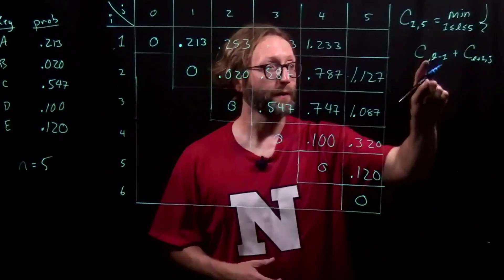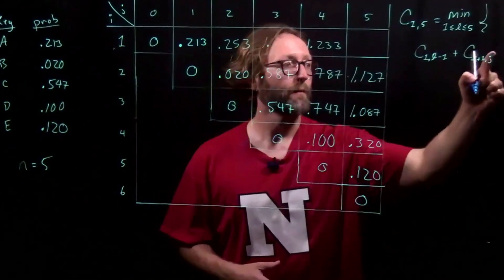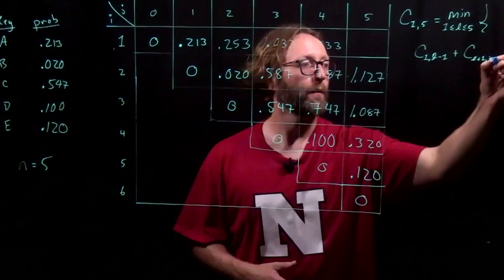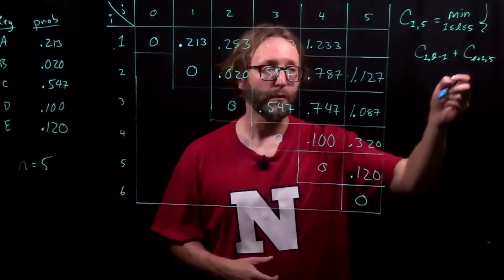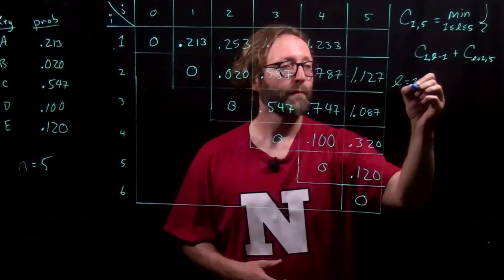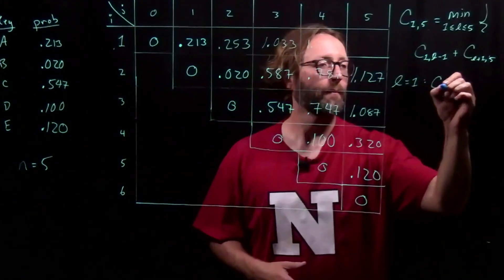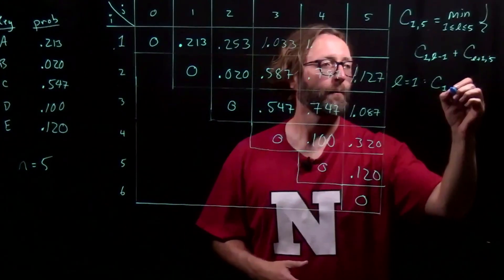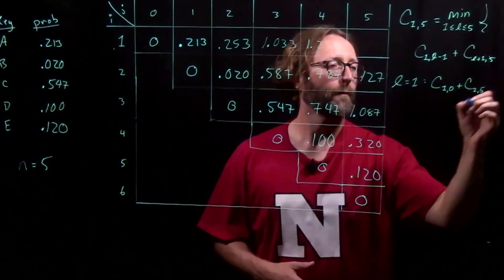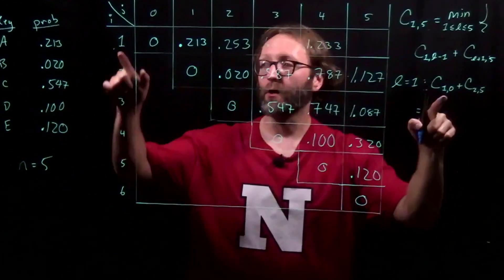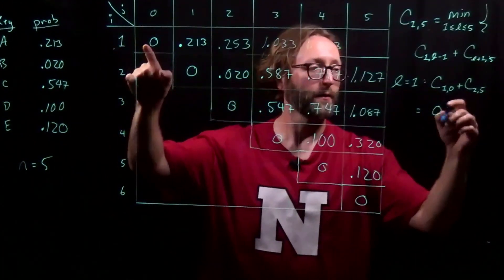Again, I and J are fixed. And we now have five possibilities for L: 1, 2, 3, 4, and 5. And a lookup gives us our values.